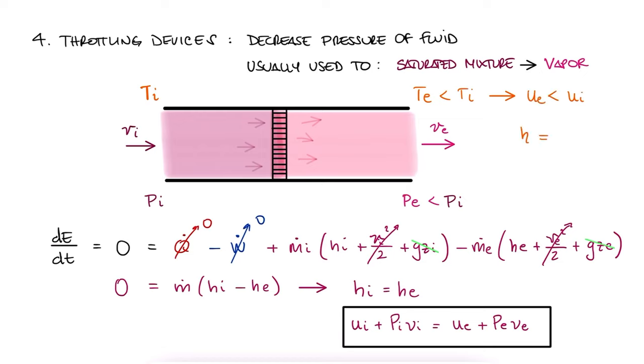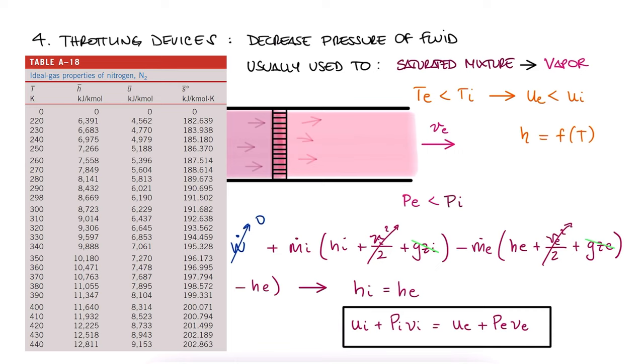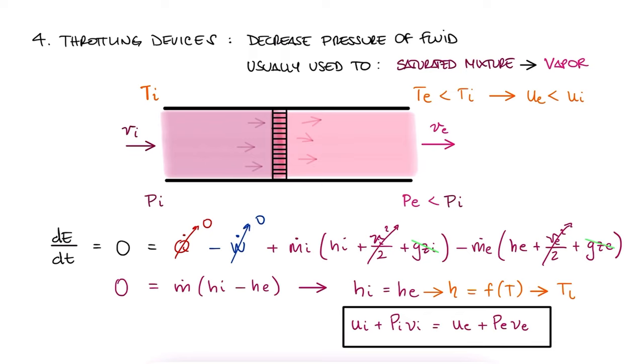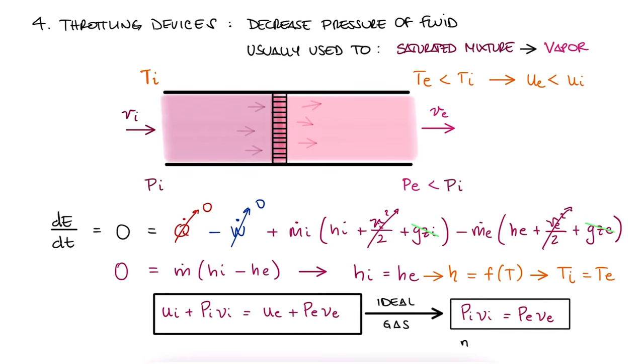However, for an ideal gas, since enthalpy is only a function of temperature, and remember this from previous lectures or just your ideal gas tables where we only need to know the temperature to find enthalpy values, it means that Ti and Te are the same, and therefore Ui and Ue are the same. And this makes sense for constant temperature and ideal gases. And that's throttling devices.